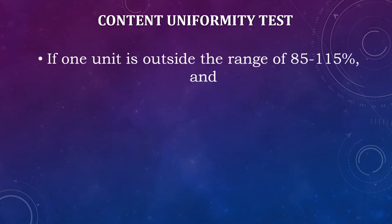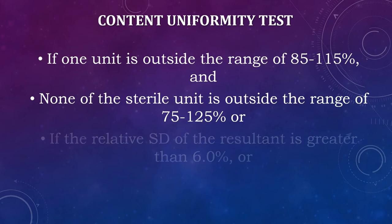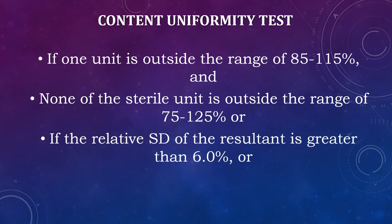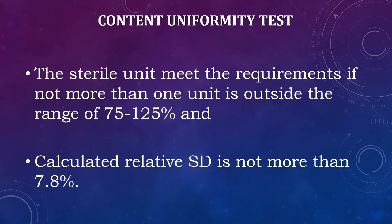If one unit is outside the range of 75 to 115 percent and none of the sterile units is outside the range of 75 to 125 percent, or if the relative standard deviation is greater than 6%, or if both conditions prevail, an additional 20 sterile units should be tested. The sterile units meet the requirements if not more than one unit is outside the range of 75 to 125 percent and the calculated relative standard deviation is not more than 7.8 percent.